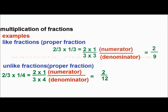Unlike fractions, also a proper fraction: 2 by 3 into 1 by 4. The numerators are 2 and 1; multiply 2 and 1, that becomes 2. And the denominators are 3 and 4; multiply 3 and 4, that is 12. That means the answer is 2 by 12.